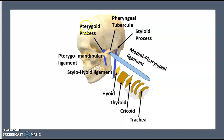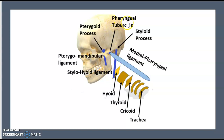From the pterygoid process, there is a ligament coming to the mandible — this is called the pterygomandibular ligament. From the styloid process to the hyoid, there is a ligament called the stylohyoid ligament. From the pharyngeal tubercle, there is the medial pharyngeal ligament.